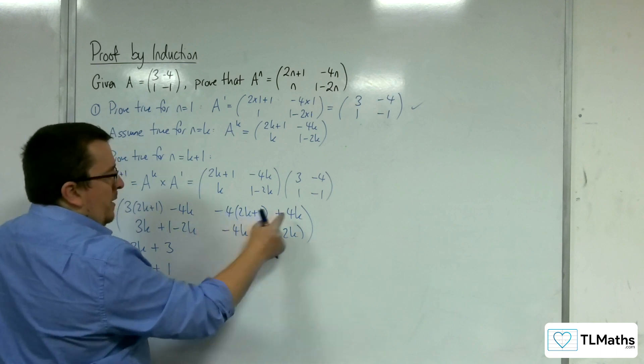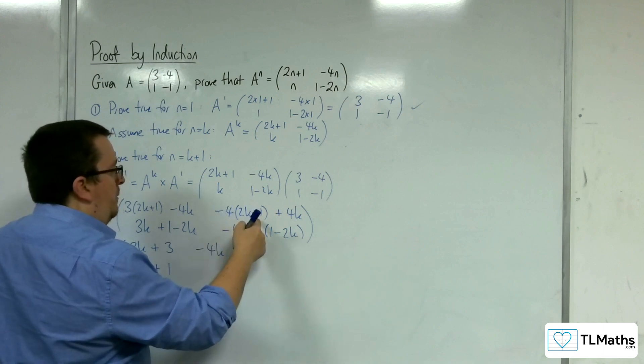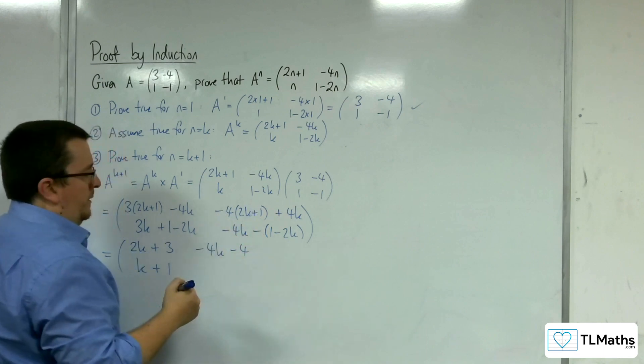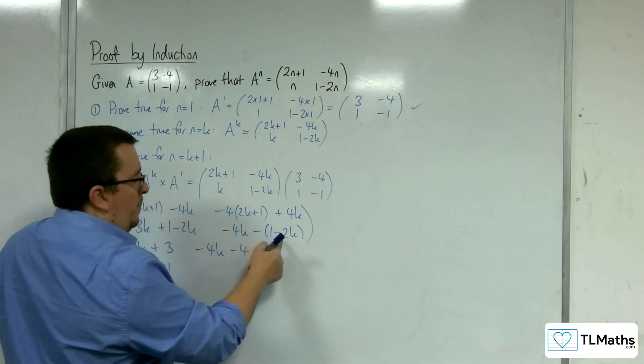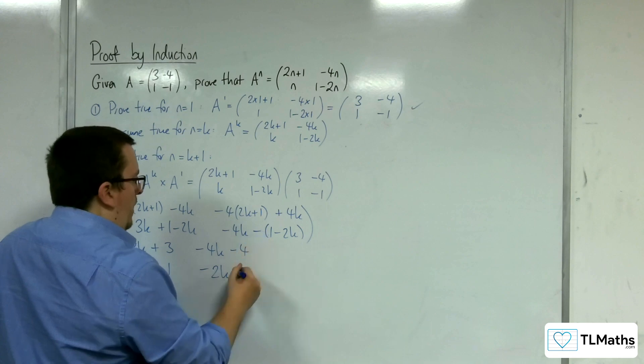We've got minus 8k plus 4k, so that's minus 4k, and minus 4 times 1, so minus 4. And we've got minus 4k plus 2k, so minus 2k take away 1.